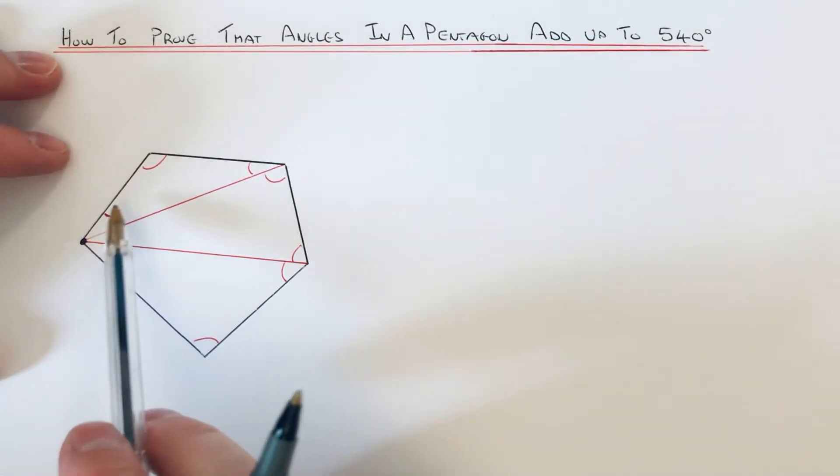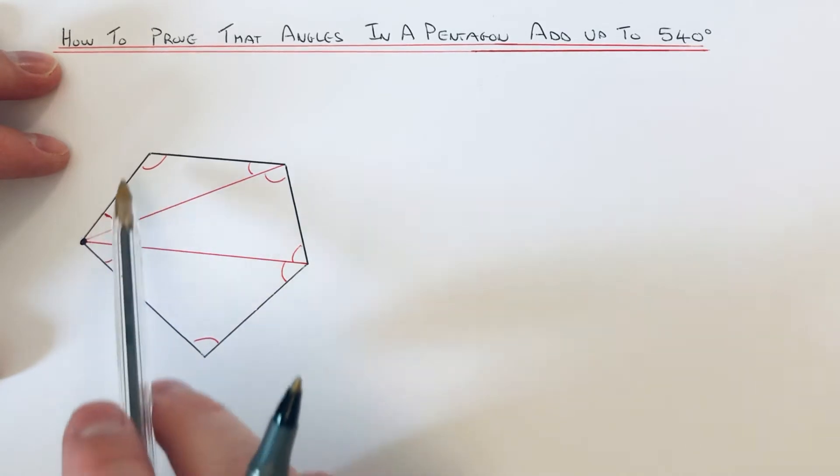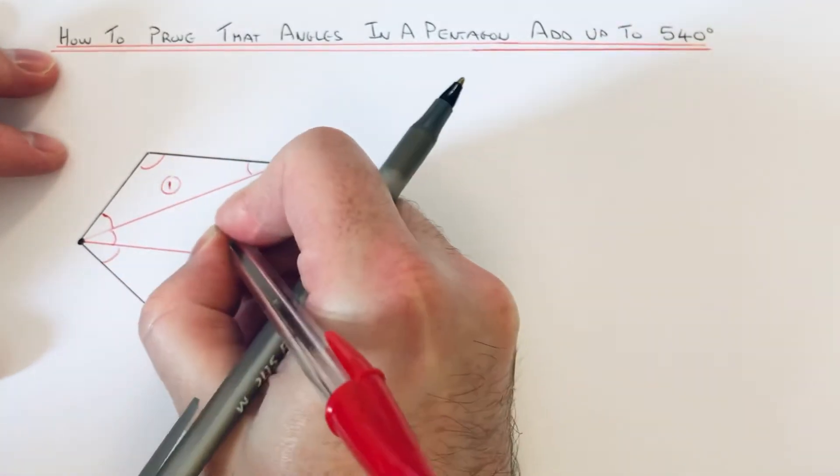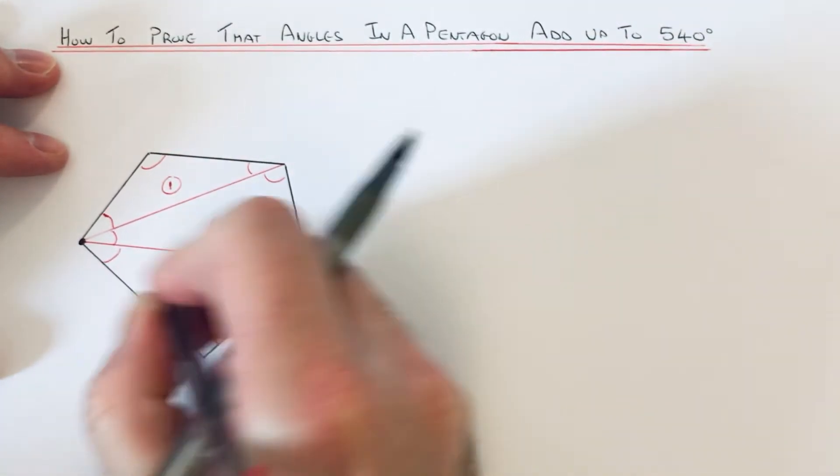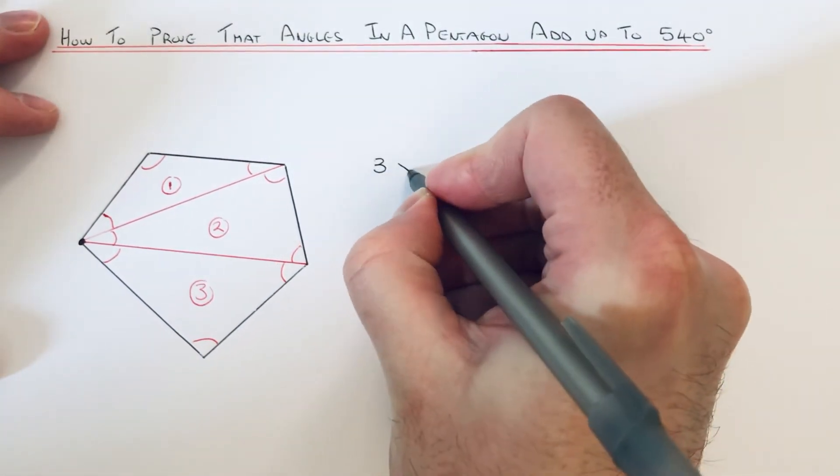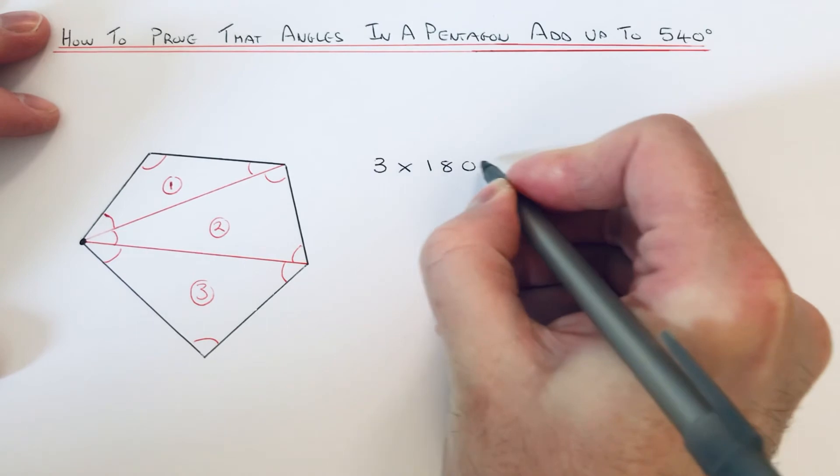And if you notice that the angles inside the triangle form the angles in the pentagon. So what we've made then, we've divided it up into three triangles. So to get the sum of interior angles, we just need to do three times 180, which gives 540.